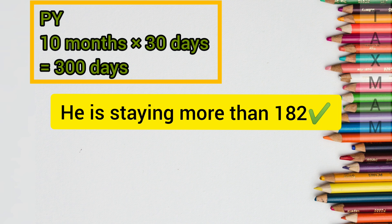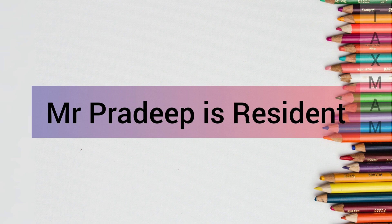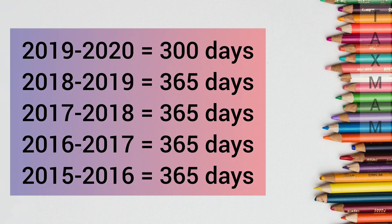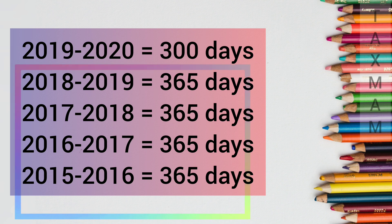Since Pradip was staying in India for approximately 300 days, the first condition of 182 days is satisfied. If any one condition is satisfied, the person will be declared a resident. Let's also check the second condition. He must be in India for 60 days in the previous year — yes, 300 days satisfies that. And 365 days in the four preceding previous years: the assessment year is 2020-21, the previous year is 2019-20, and the four preceding previous years are 2018-19, 2017-18, 2016-17, and 2015-16.